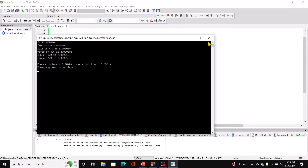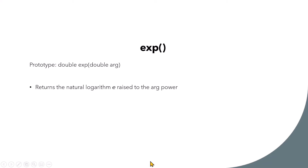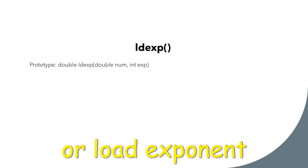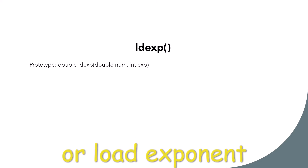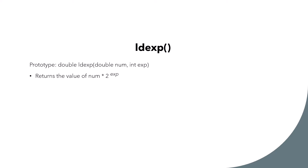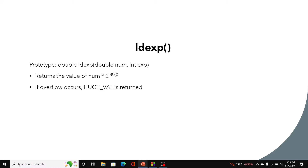We also have ldexp. This function returns a double and takes two arguments — one a double and one an integer. It returns the value of num, the first argument, multiplied by 2 raised to the second argument, which serves as a power. If overflow occurs, HUGE_VAL is returned.